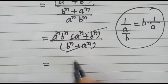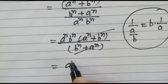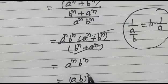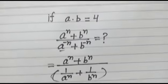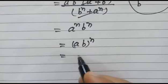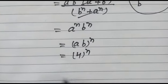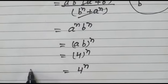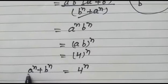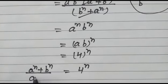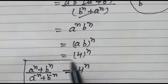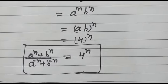So we have remaining only a to the power n, b to the power n, or a into b to the power n. As we have given that a into b is equal to 4, here we get 4 to the power n. So a to the power n plus b to the power n over a to the power minus n plus b to the power minus n will be equal to 4 to the power n. Okay friends, thank you.